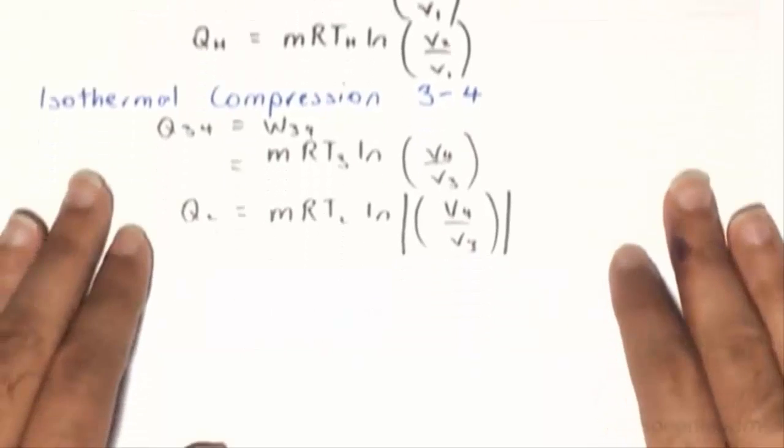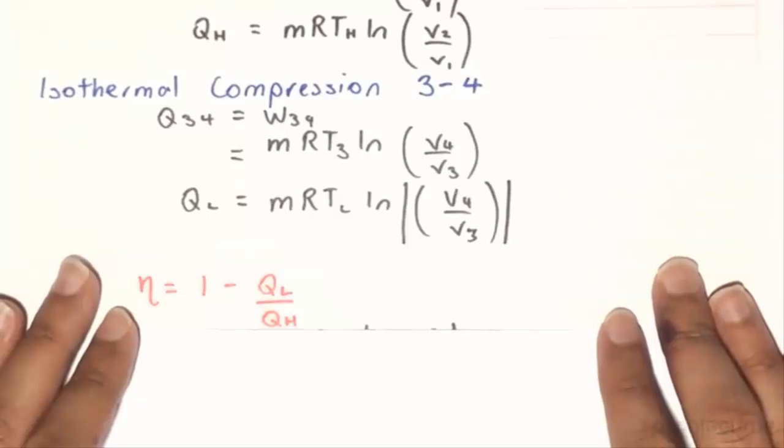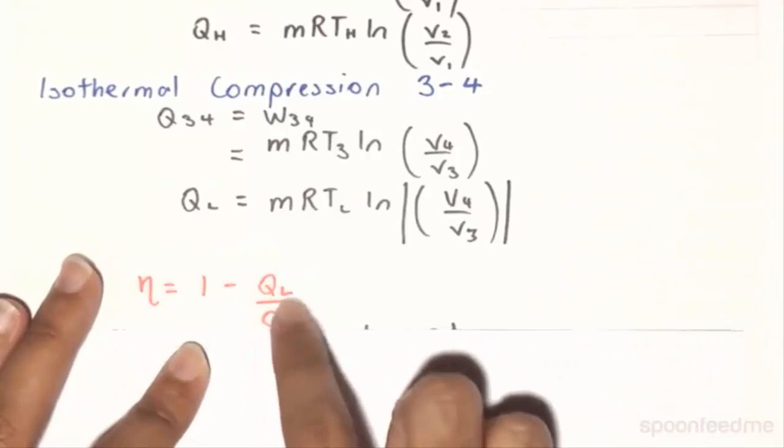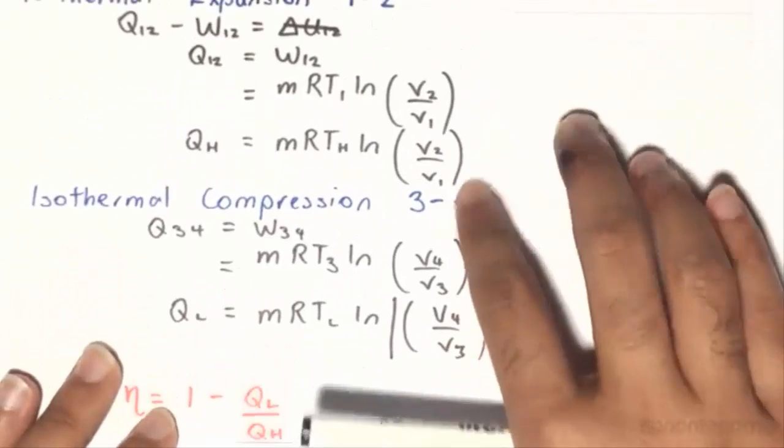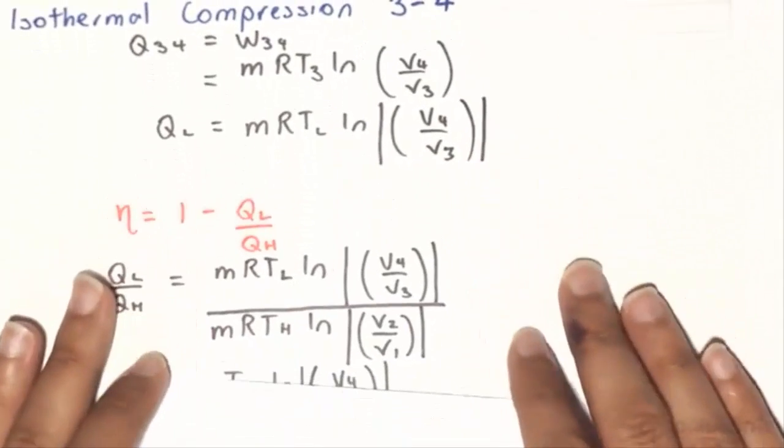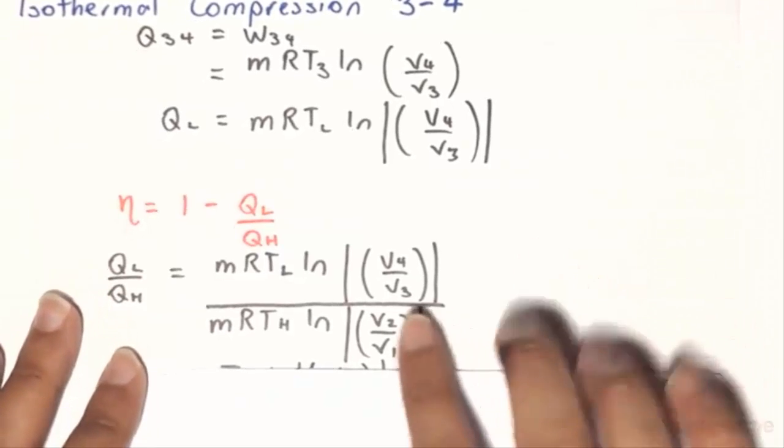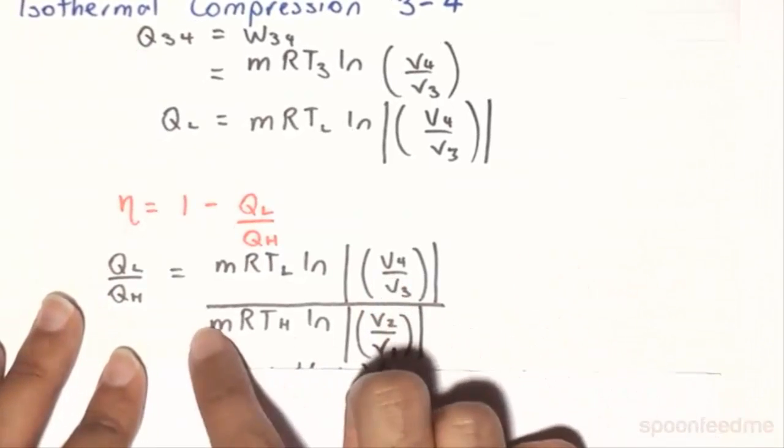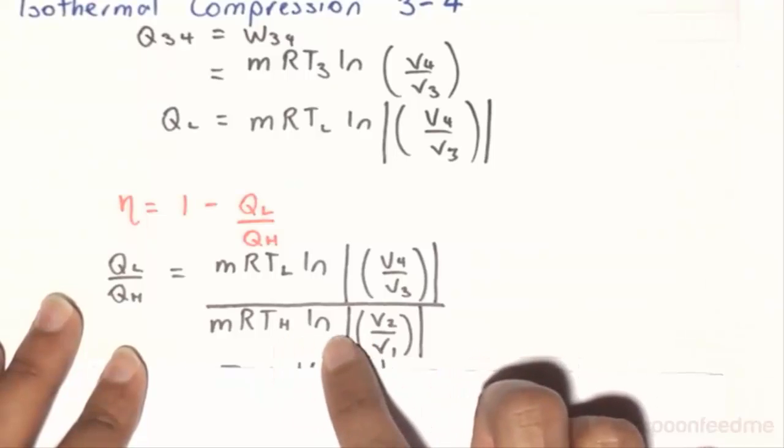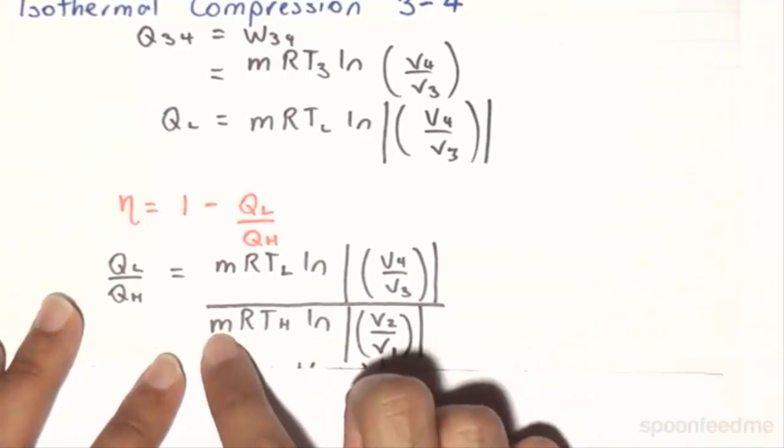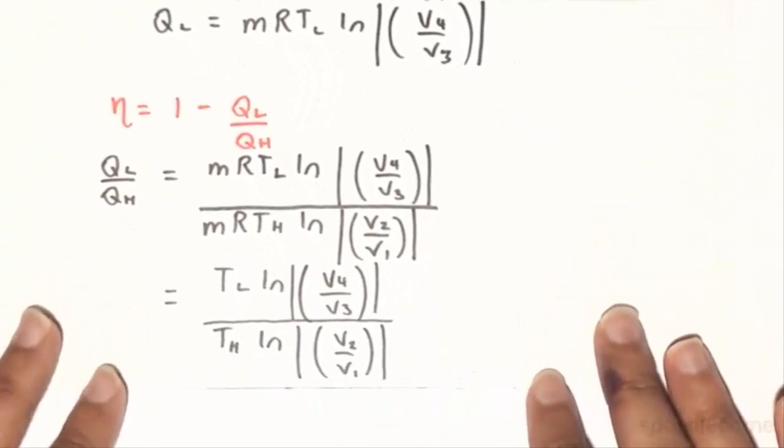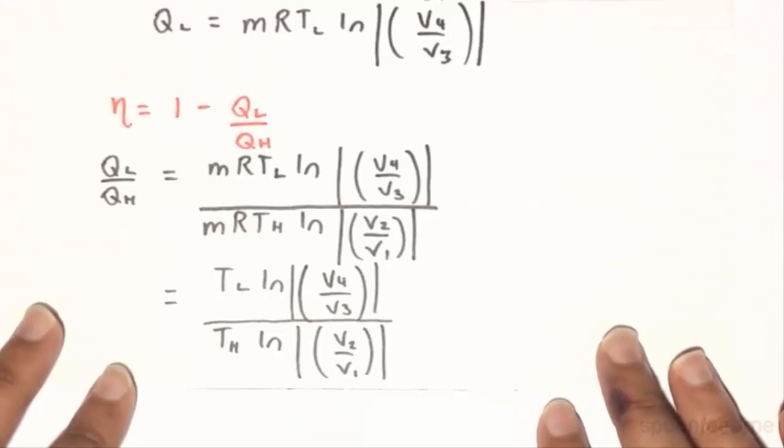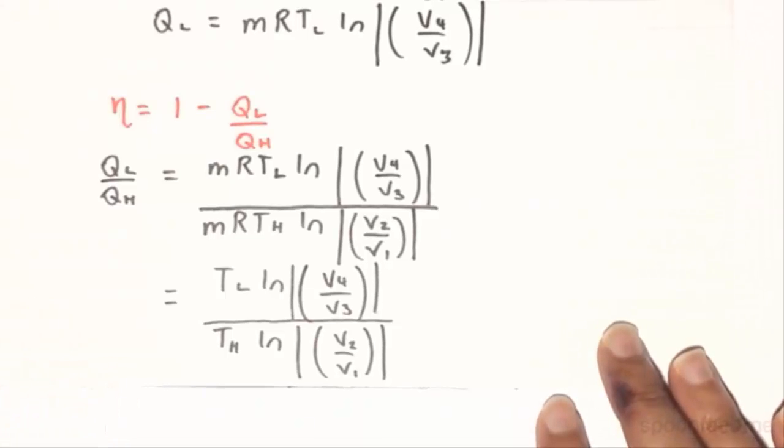So now, if you recall that a thermal efficiency is equal to 1 minus QL on QH, so let us try and find this QL and QH ratio using our previously found expressions. So QL on QH will be equal to MRTL, the natural log of V4 on V3, all over MRTH, the natural log of V2 on V1. And so if we cancel out the M's and the R's, we will get QL on QH is equal to TL on TH, the natural log of V4 on V3, over the natural log of V2 on V1.